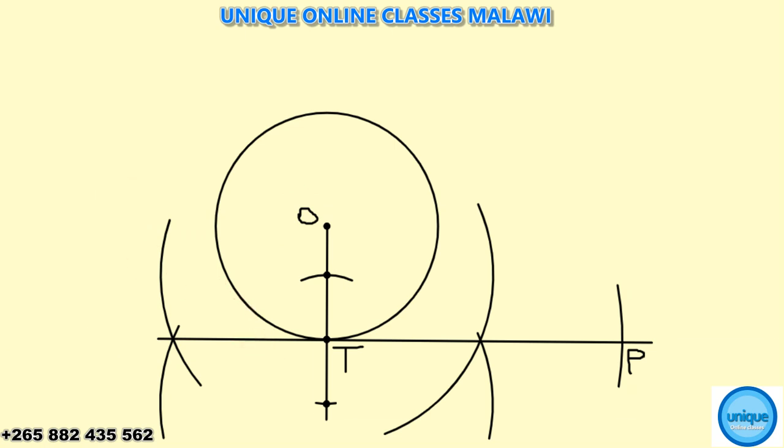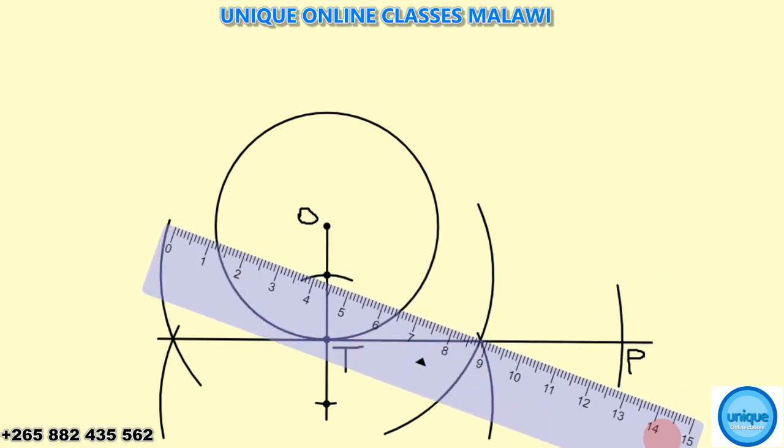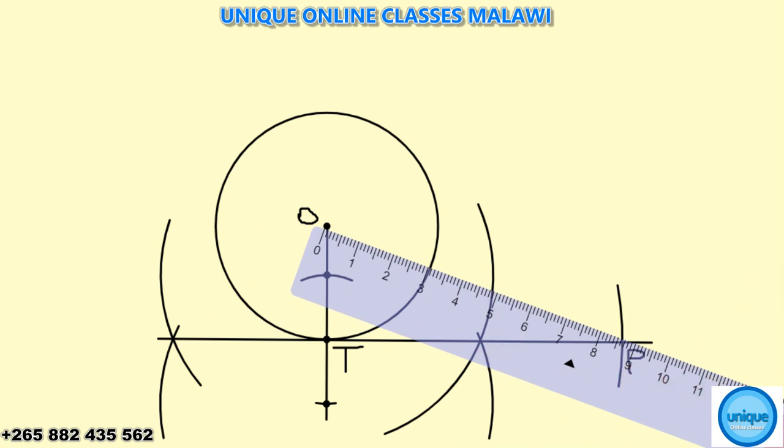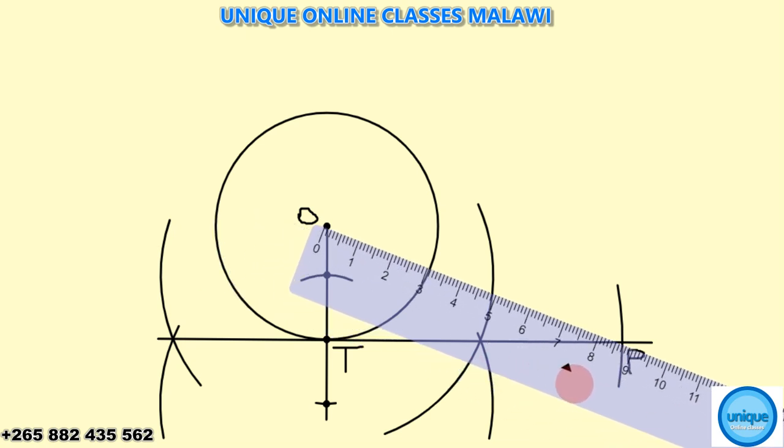The question is asking us to measure OP. The radius is 3 centimeters. I'm using my ruler here from O to P. As you can see, that is zero and this is 8.1, 8.5, and 8.7. So that's 8.7 from P to O, 8.7 centimeters.